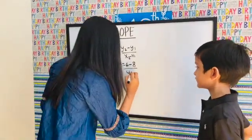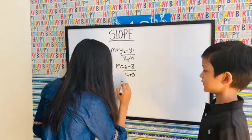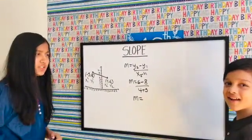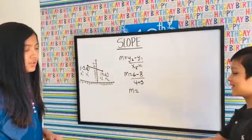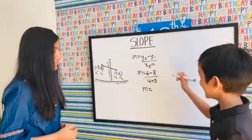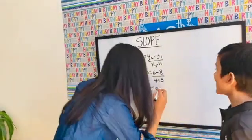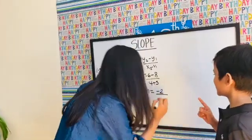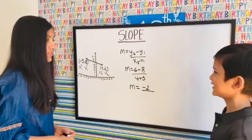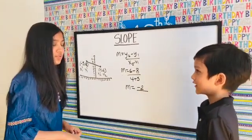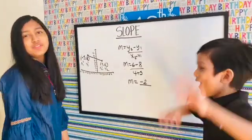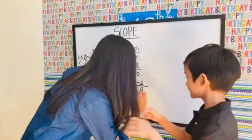And minus negative 5 — we just turn that into positive. So m equals... what's 6 minus 8? That's negative 2. And what is 4 plus 5? Everyone knows that — it's 9.